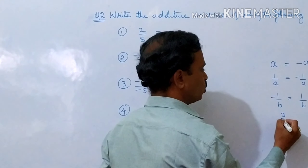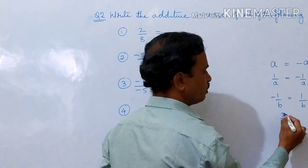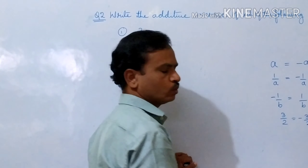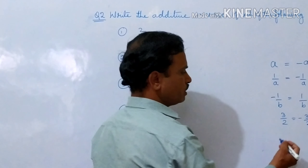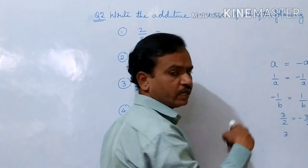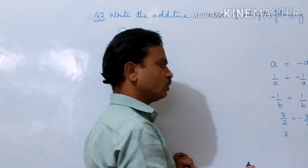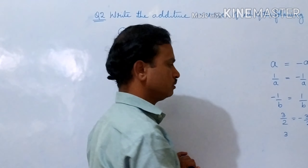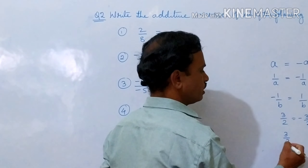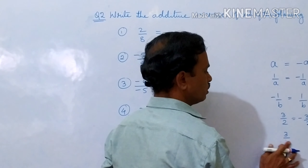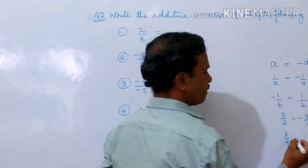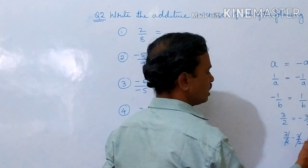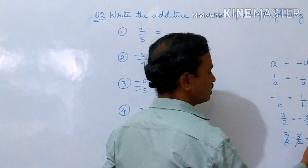Now 3 by 2. What is the additive inverse of 3 by 2? It is minus 3 by 2. Additive inverse means when you add these two you should get 0, because 0 is the identity element for addition. So 3 by 2 plus minus 3 by 2 — they get cancelled, that is 0.